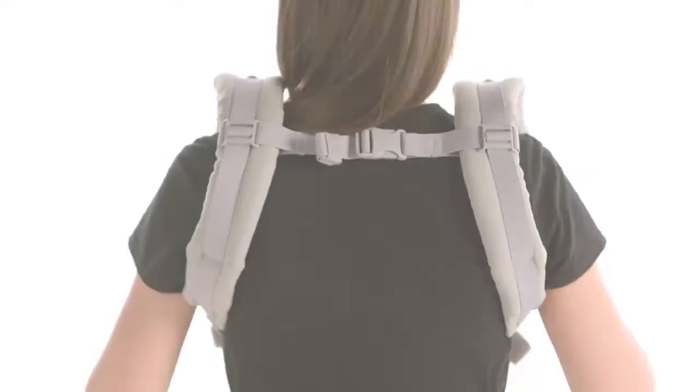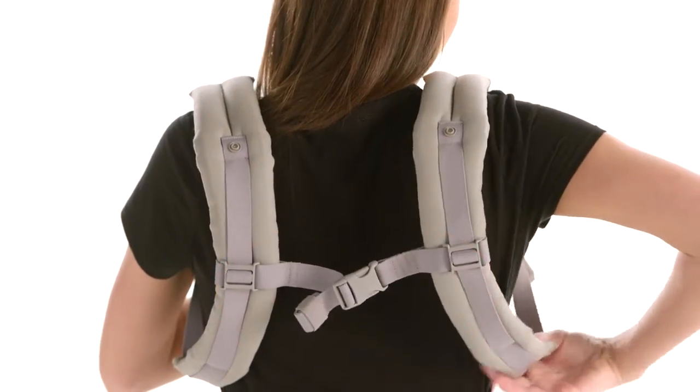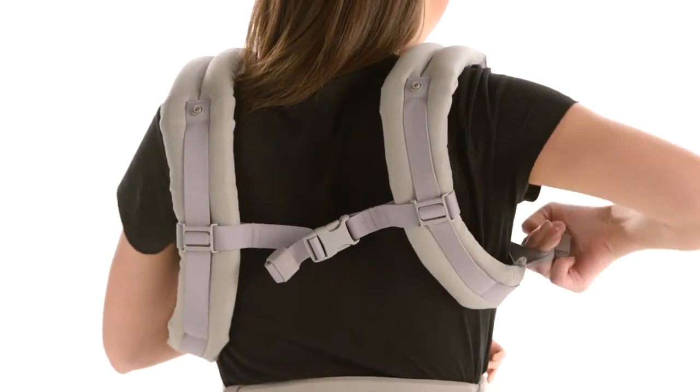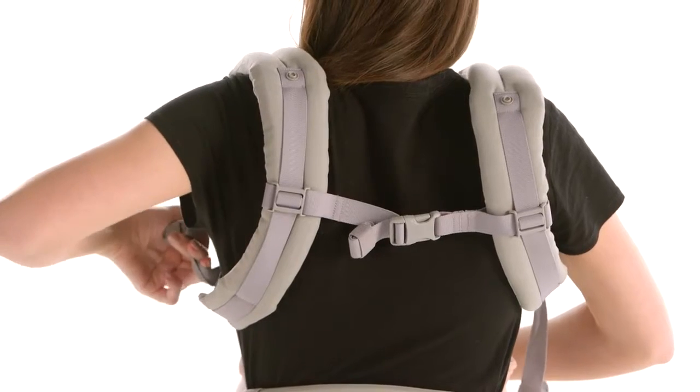Make sure the back strap is in the middle of your shoulder blades using the sliders. Keeping the shoulder straps loose will make it easier for you to buckle. Pull them backwards to tighten without putting pressure on your baby's back.